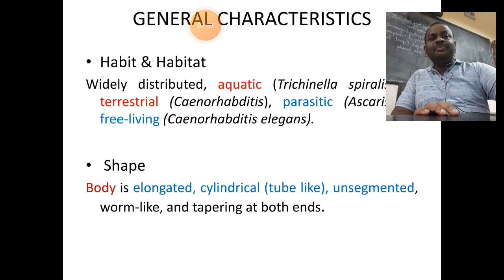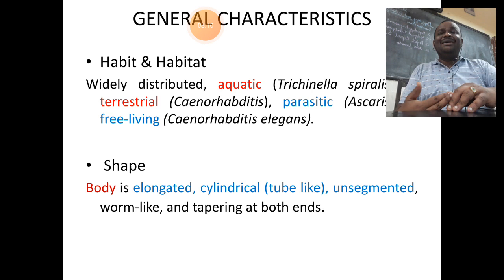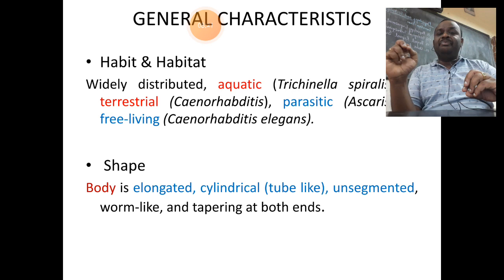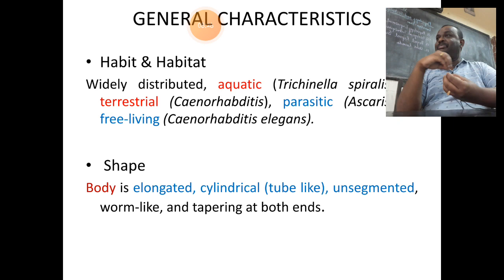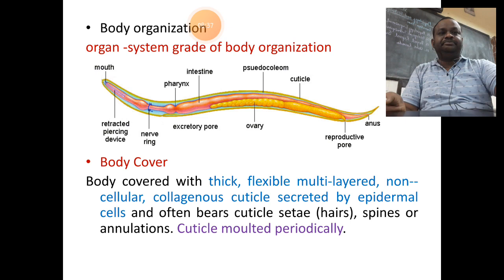Regarding the shape of nematodes, they have an elongated, cylindrical, tube-shaped body showing distinct anterior and posterior ends. The body is unsegmented and both ends are tapering. It is not divided; it looks like a worm with a soft, cylindrical, elongated body.